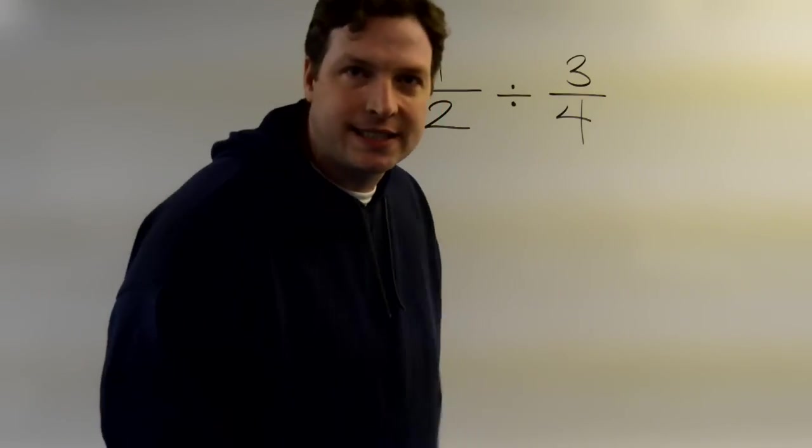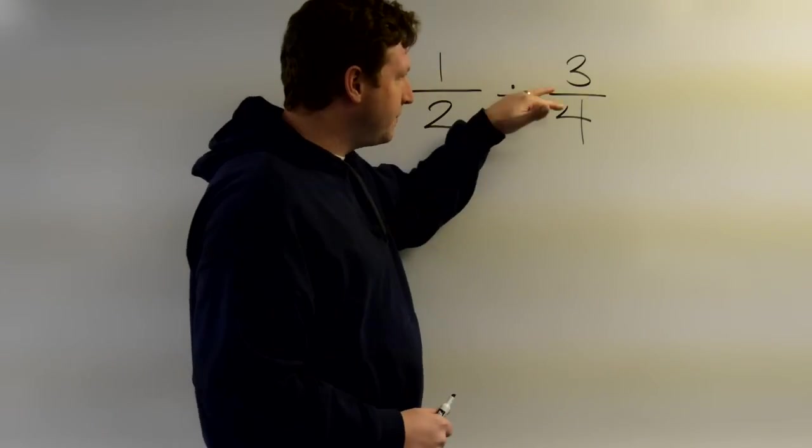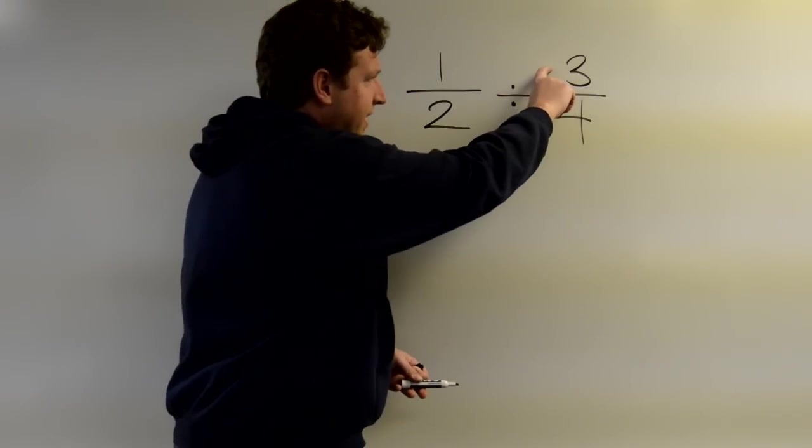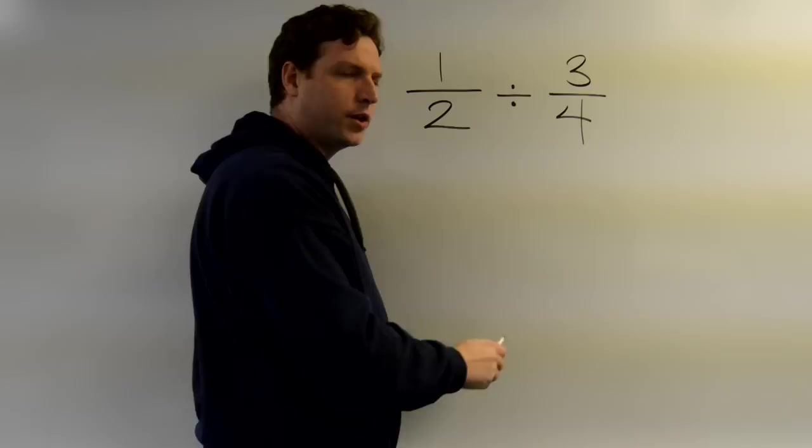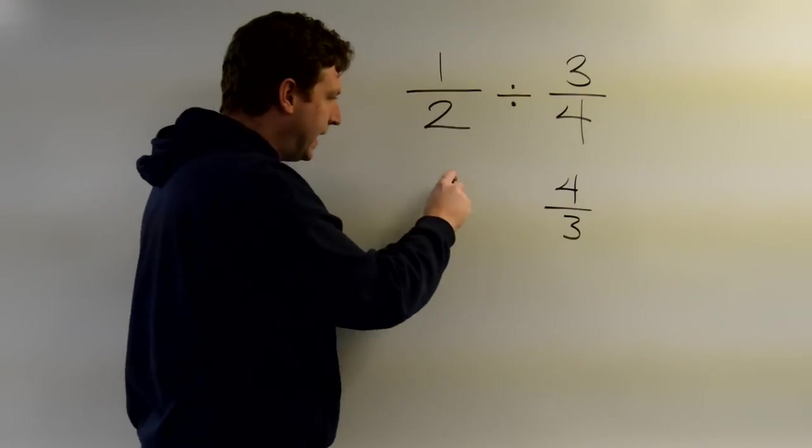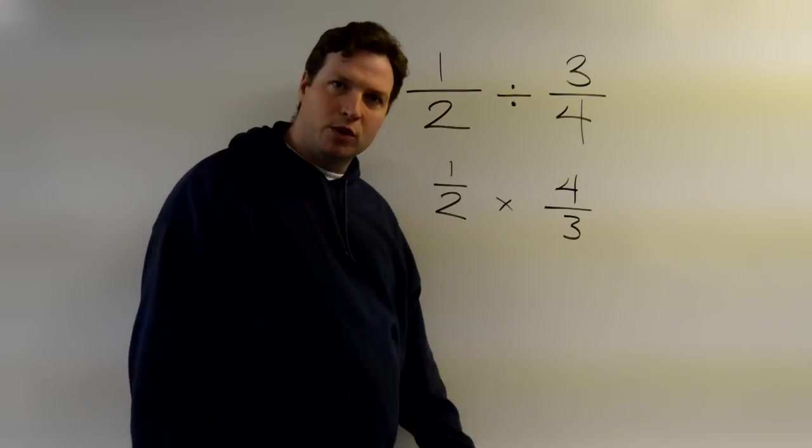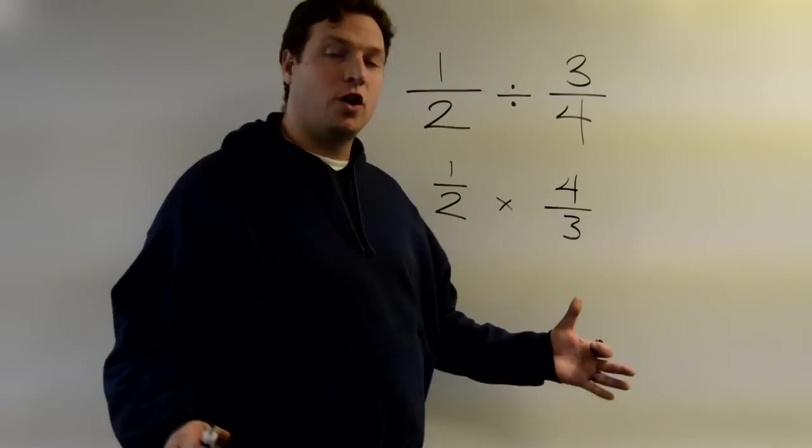Dividing fractions is almost as easy as multiplying them. Multiplying we just do it straight across. Dividing, we have one more step. We have to flip this second fraction. It's called a reciprocal. That's just this number flipped over. So the reciprocal of three-fourths is four-thirds. And then we keep our first one the same and now we multiply.